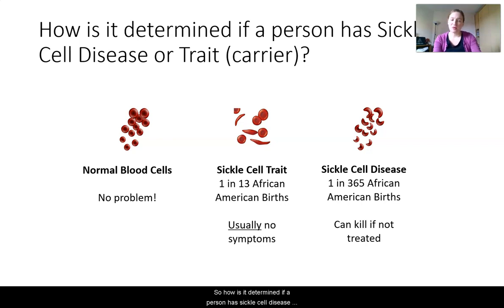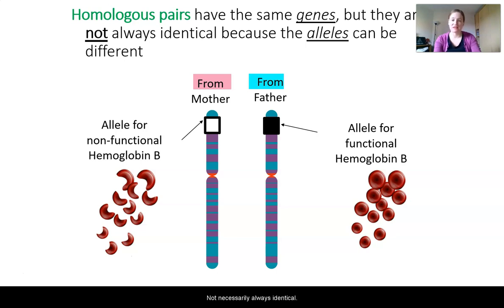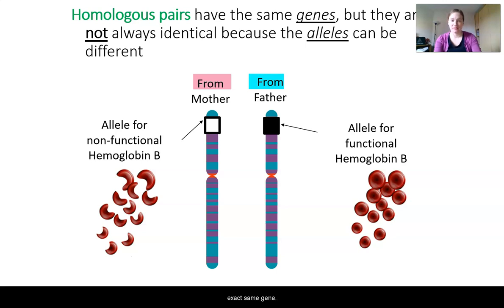So how is it determined if a person has sickle cell disease or trait? We need to look at their red blood cells and consider where the information that codes for the protein in these red blood cells comes from. A quick reminder from our vocabulary lessons: homologous pairs of chromosomes all have the same genes, but they're not necessarily identical because the alleles can be different. Alleles are just different versions of the exact same gene.